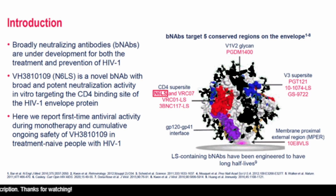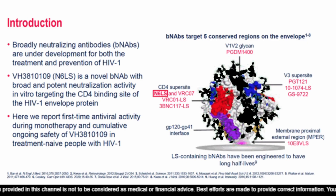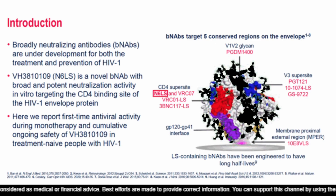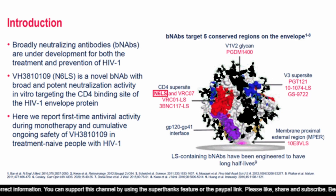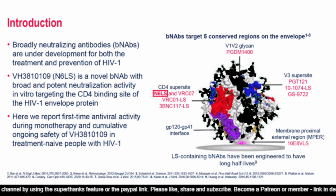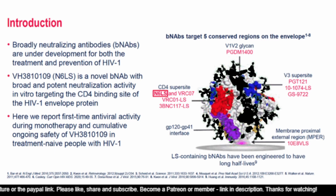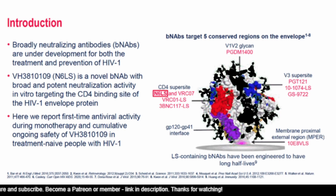What I want to talk about here is that you have the broadly neutralizing antibodies shown in this diagram. You will see that we have at the very top PGDM1400, and then as we move clockwise we have PGT121, then 10E8VLS, then N6LS, VRC07, VRC01, and 3BNC117LS. All of these are going to be discussed jointly but I'm going to explain one BNAB at a time to keep it simple.